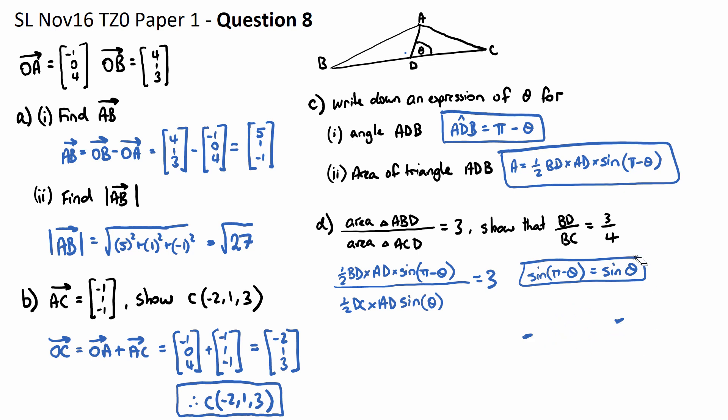So I'll get rid of this. I'll put just a reference to it. So the halves cancel out, the ADs cancel out, and sine pi minus theta is just sine theta. So they cancel out. So we end up just getting BD over DC is equal to 3.